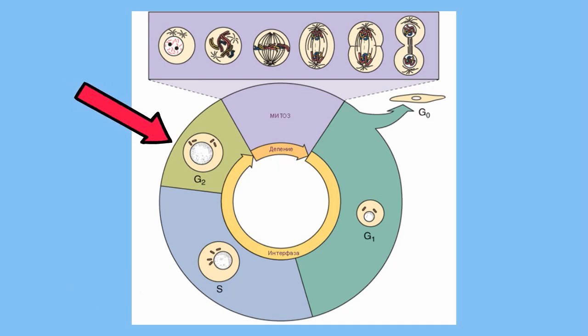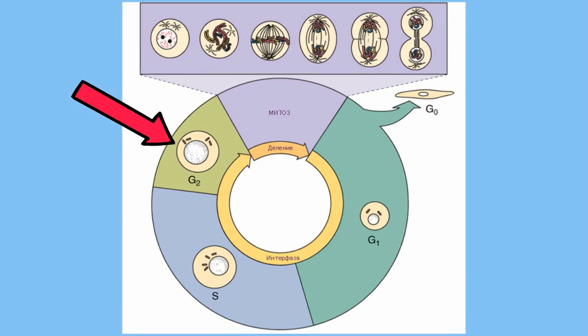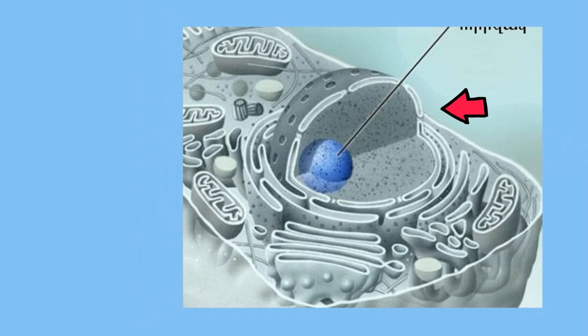Finally, during G2 the cell continues its normal cell activities and prepares for the nucleus to divide and makes special proteins for this cell division.